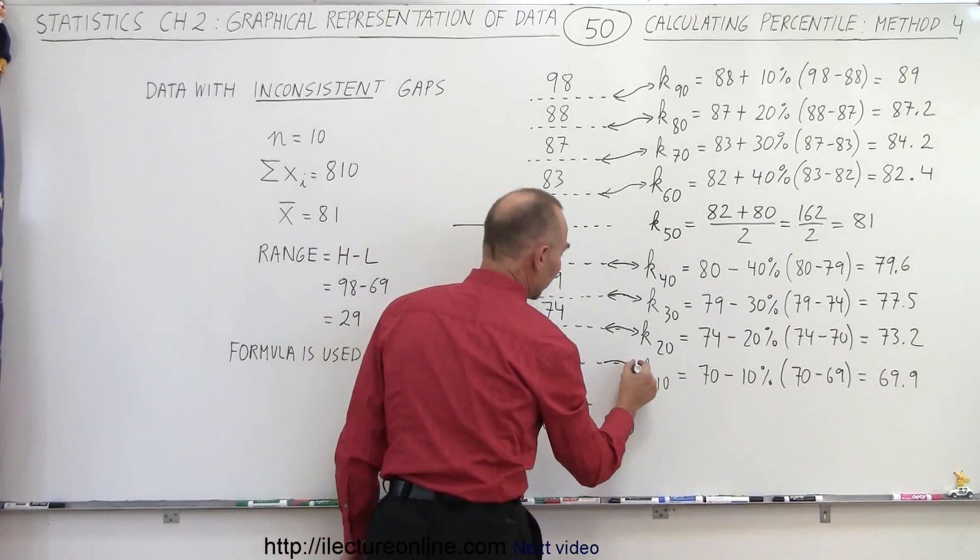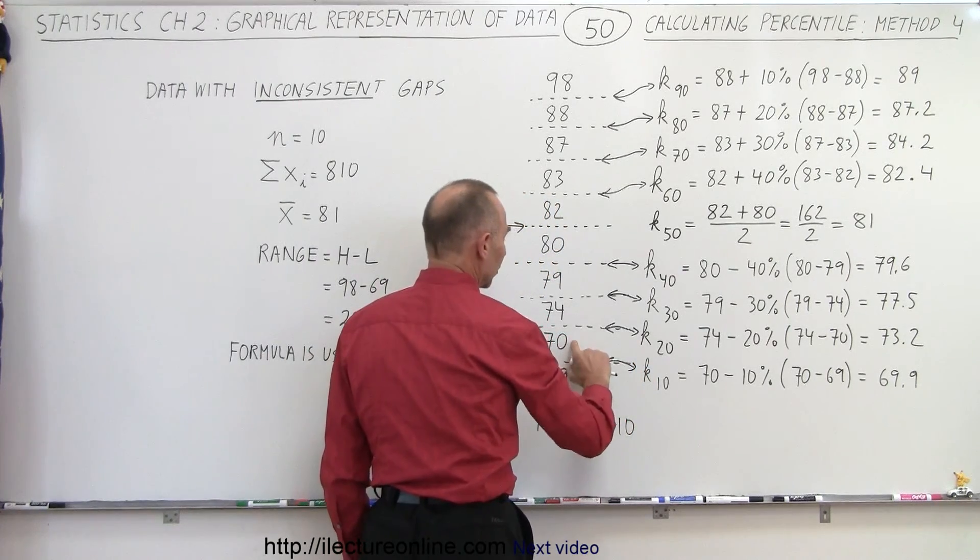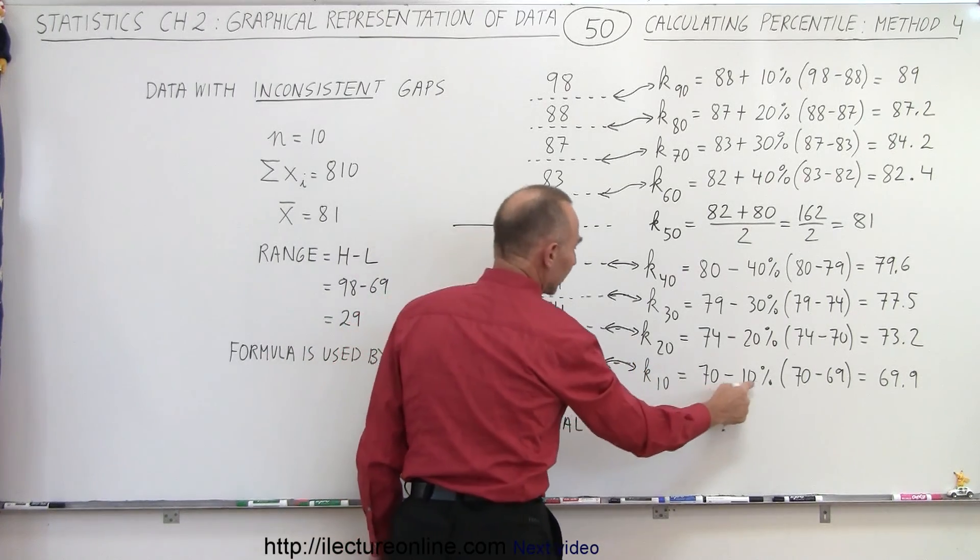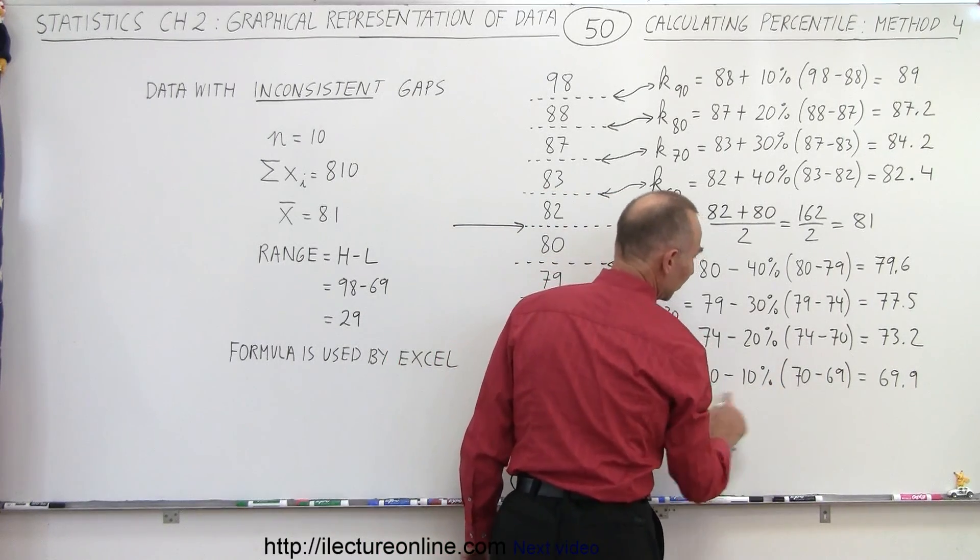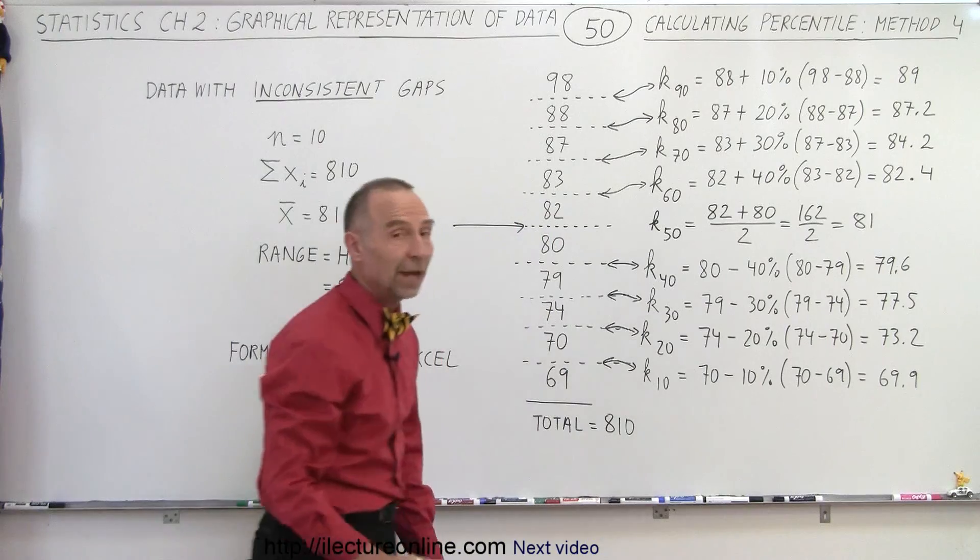And finally, to get the 10th percentile, we take the larger of the two values, subtract 10% of the difference. The difference is 1. 10% of 1 is 0.1. Subtract 0.1 from 70, you get 69.9.